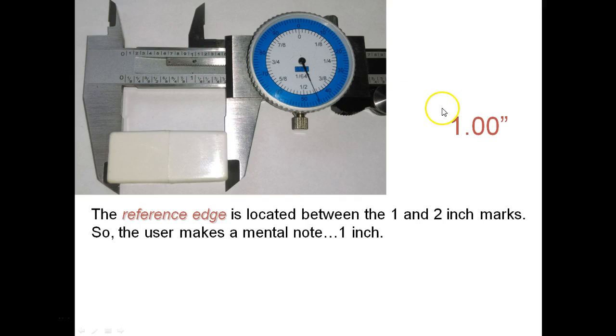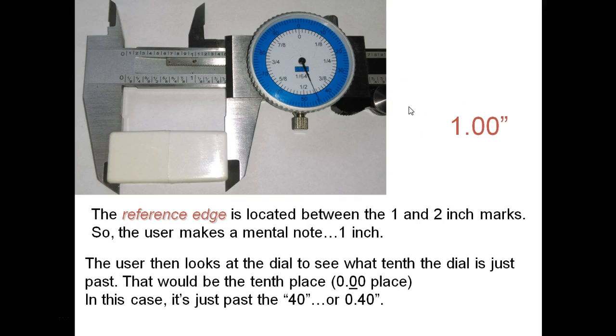Now look onto the dial itself and we're going to focus just on the blue portion of it. We're going to see what tenth the dial is just past. And that would be the tenth place. So here we have the 10, 20, 30, 40. It's just past the 40. It's not to the 50 yet. So I know it's one inch, 1.4 something. So I'm going to mark that down, 1.4.